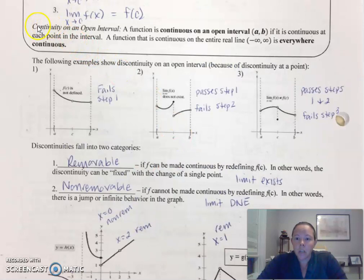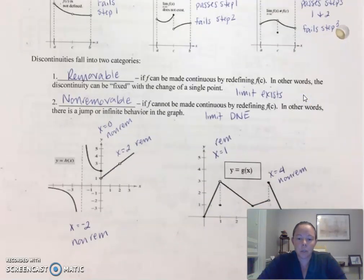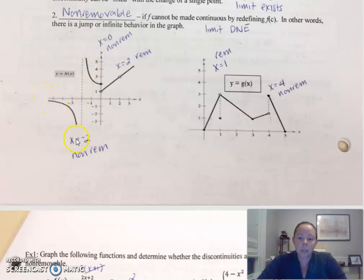Continuity on an open interval: a function is continuous on an open interval if it's continuous at each point in the interval. The key thing is notice you're using an open interval. Continuity at endpoints varies in textbooks, but usually we're going to have open intervals for continuity. So notice if you start from left to right, where do we have parts on the graph where we have to lift our pencil? If you start from the left, you're good to go until you get to x equals negative two, where you have a non-removable discontinuity because it's an asymptote.